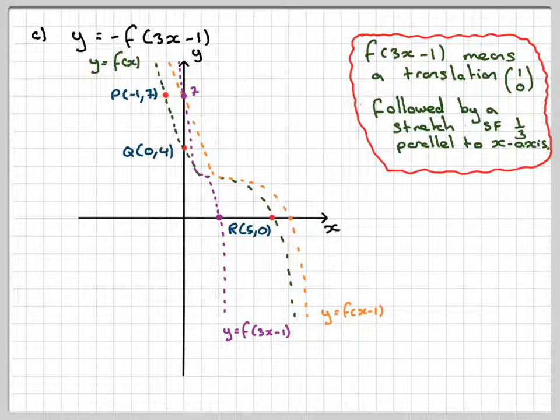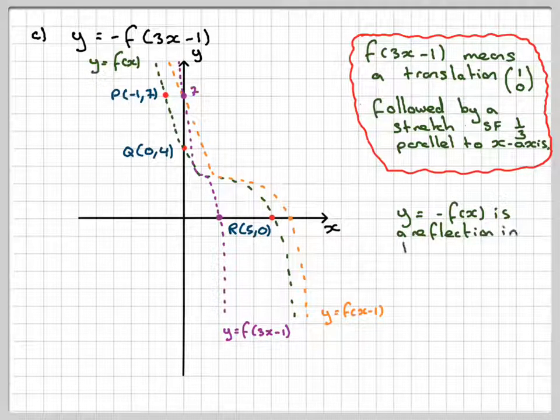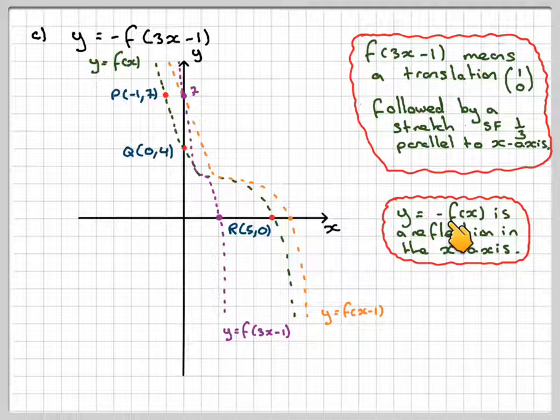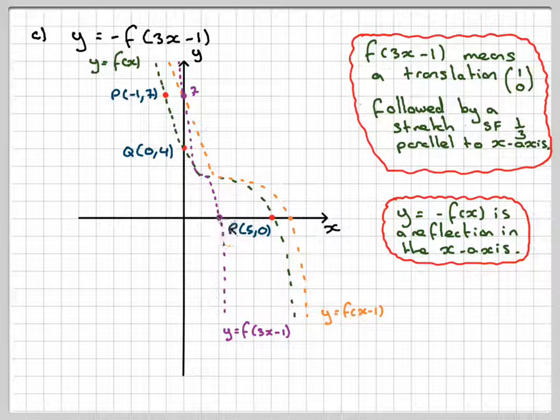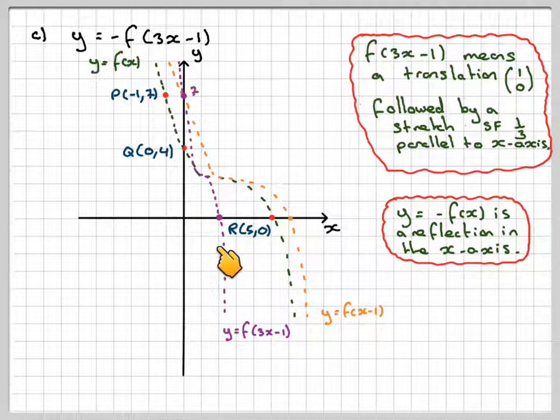The final thing is, what does y equals minus f of x? Well, if we've got this purple graph, minus f of x is a reflection in the x-axis. So this bit here will get reflected up here, and this bit here will become down here.